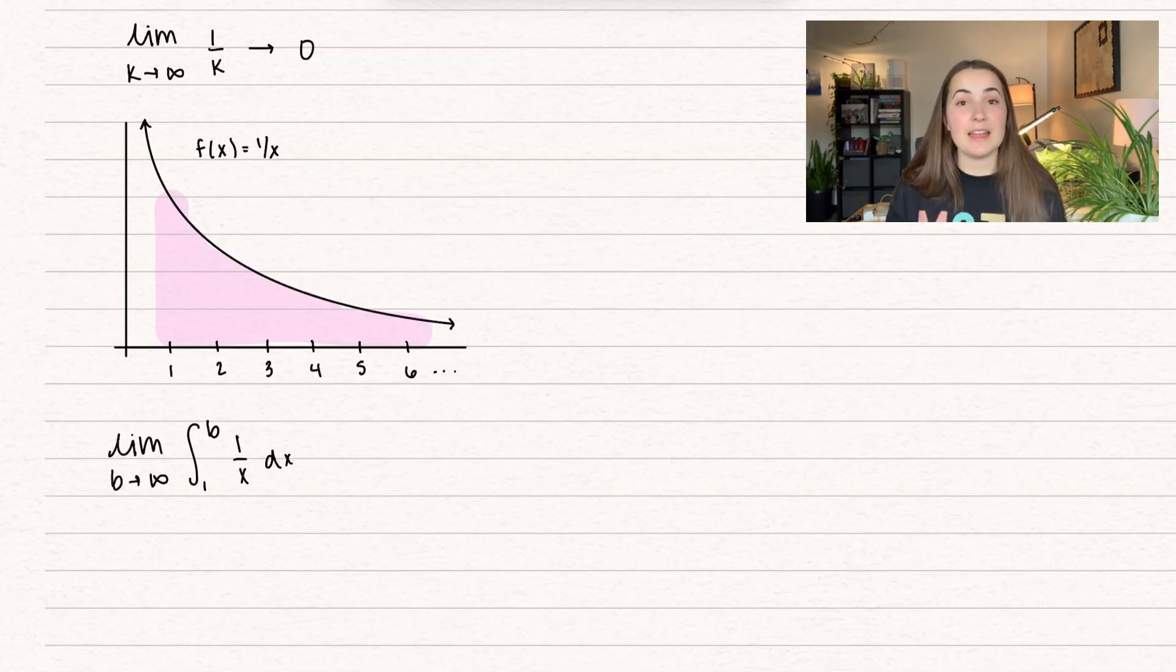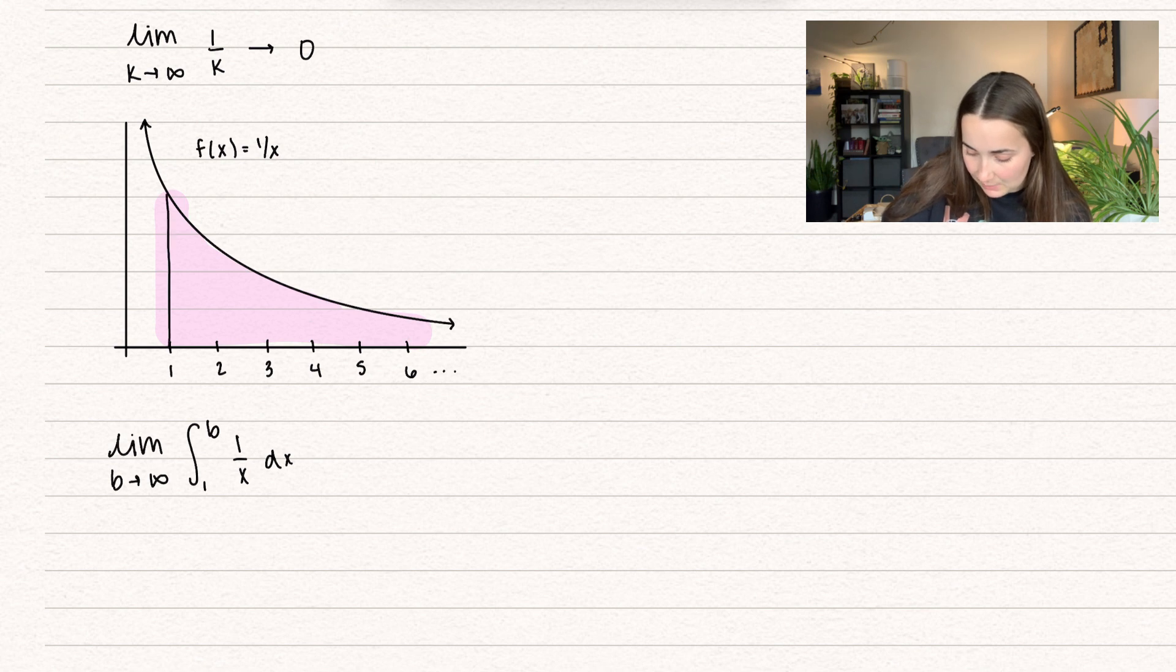We're going to compare that to the Riemann sums. So do you remember with Riemann sums? We take an area, I'm going to go all the way up to my function, and I estimate it with a rectangle. So here would be your first rectangle. And notice that this area is equal to 1.